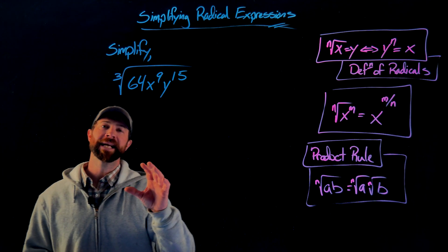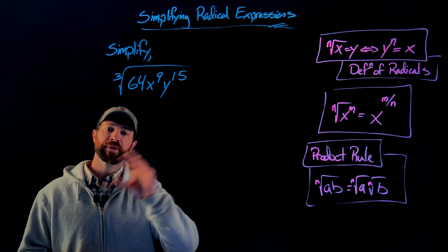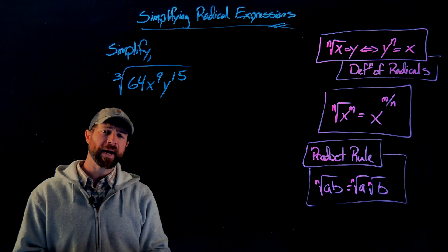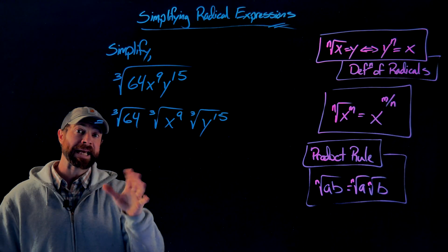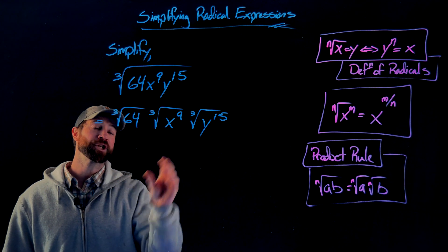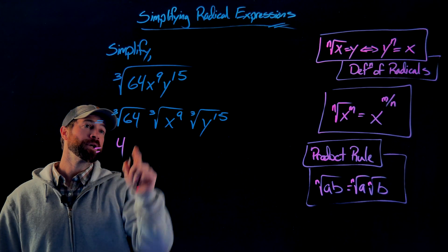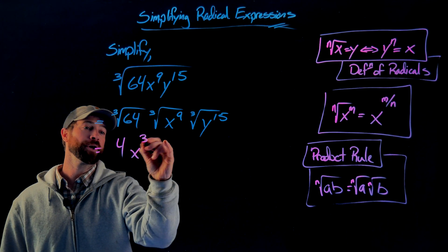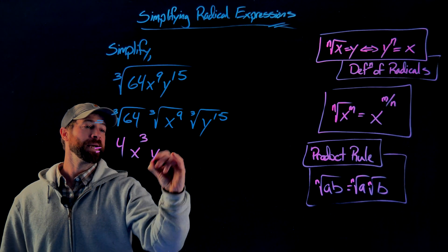For example, the third root of 64x to the 9th and y to the 15th — I can attack each factor individually using the product rule. The cube root of 64 is 4. The cube root of x to the 9th: divide 9 by 3 to get x to the 3rd. The cube root of y to the 15th: divide 15 by 3 to get y to the 5th.